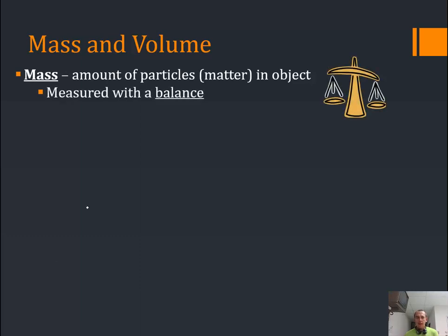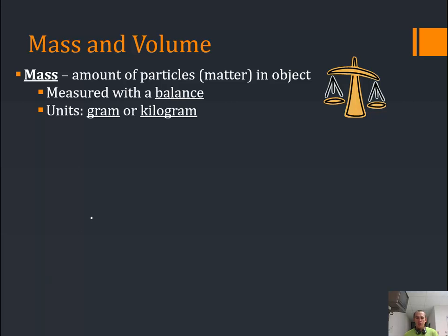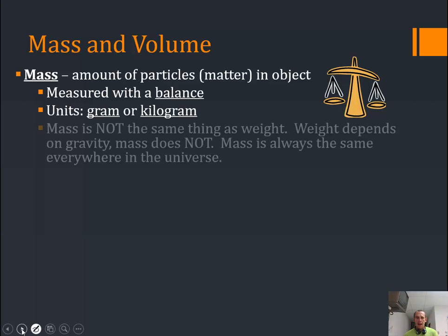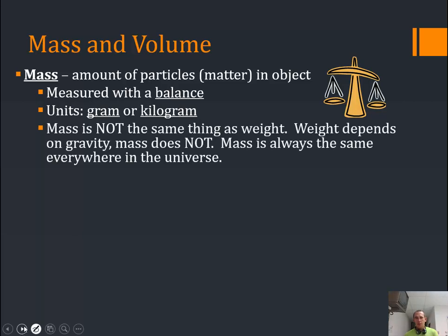We measure mass with a balance — that's the tool we use. We have both analog or old-school balances that have pans on them, and also new digital balances. We use the units of grams or kilograms; we don't use pounds. Pounds measure weight, and mass is not weight. Weight depends on gravity; mass does not.